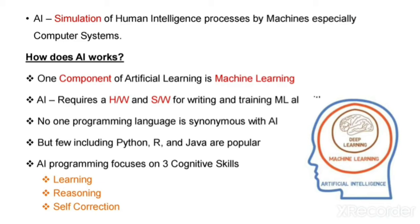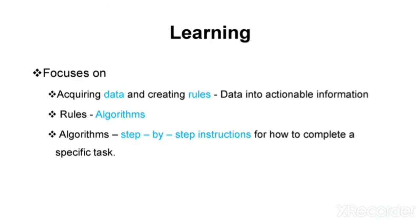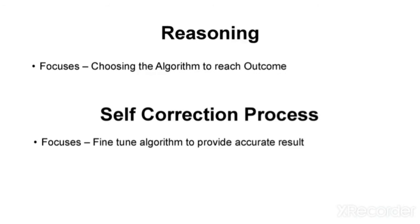How does AI work? One of the main components of AI is ML. AI programming focuses on three cognitive skills. First, learning — acquiring data and creating rules where data can be converted into actionable information using algorithms, which are step-by-step instructions. Second, reasoning — choosing the right algorithm to reach an outcome. Third, self-correction — fine-tuning the algorithm to provide accurate results.